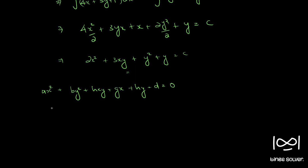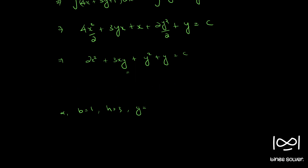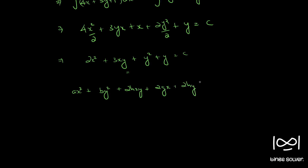The standard general second-degree equation is ax squared plus by squared plus 2hxy plus 2gx plus 2fy plus d equals 0.